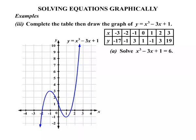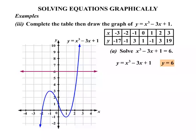Next step: solve x cubed minus 3x plus 1 equals 6. The left-hand side matches our graph, which is already drawn. We consider the graph y equals 6 — a horizontal line through 6 — and insert it into the diagram. It has one intersection point, so there is one solution. Reading off the x coordinate, it's between 2 and 3, and estimating as best we can: x equals 2.3, to one decimal place.